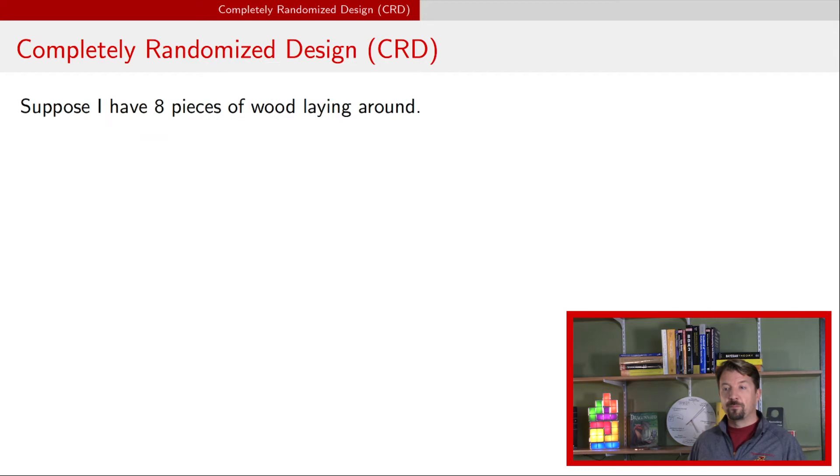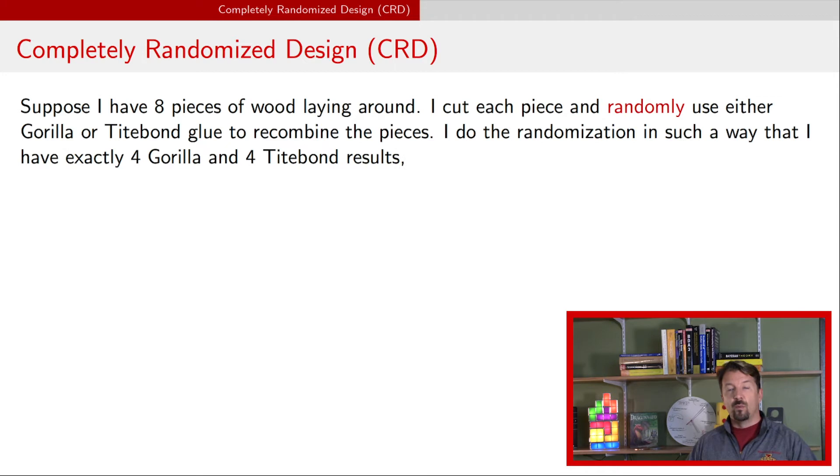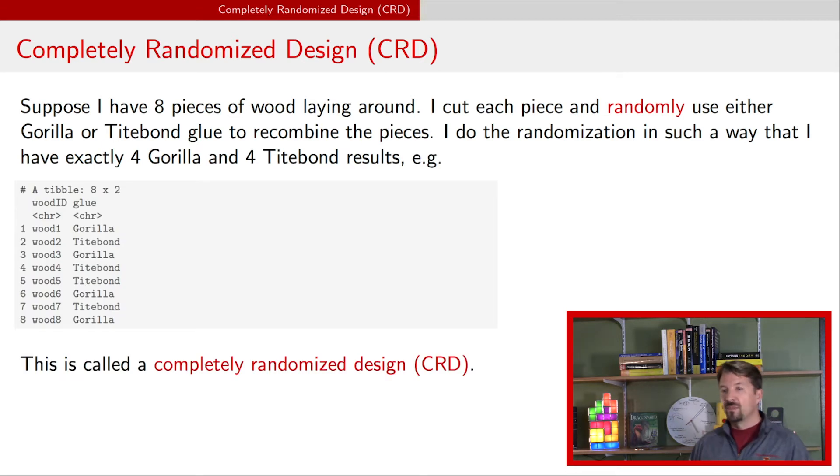Now suppose that I have eight pieces of wood lying around and I number those pieces one to eight and then I'm going to randomly assign whether Gorilla or Titebond is used on each of those pieces of wood. Once I do that randomization I'm going to do the randomization in such a way that I ensure that there are four of those eight are Gorilla and four of those eight are Titebond. So as an example this is what I might have seen. There are various ways to do this randomization. I tend to do it using the sample function in R. If you're in Excel you could do it using random uniform numbers. In this example you could have taken an eight sided die and just rolled it until you got four unique numbers and suppose you did that and you said ahead of time that those first four get Gorilla. Then imagine that you got the numbers one three six and eight so Gorilla are those four pieces of wood and the remainder are Titebond.